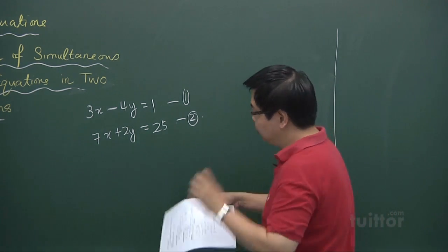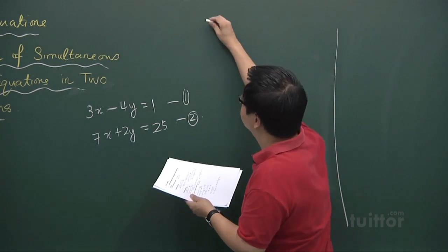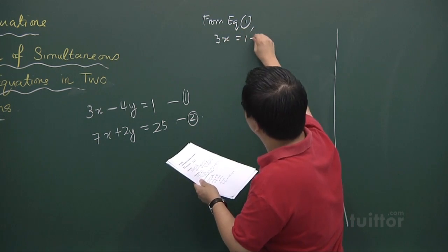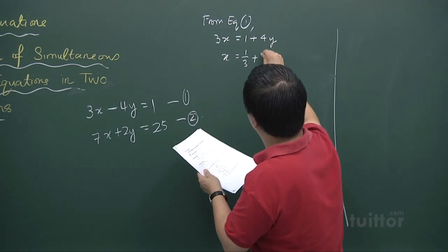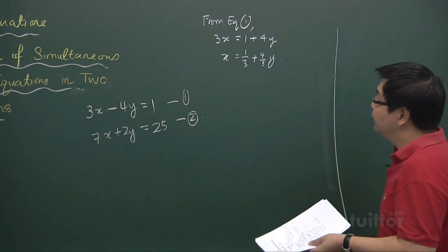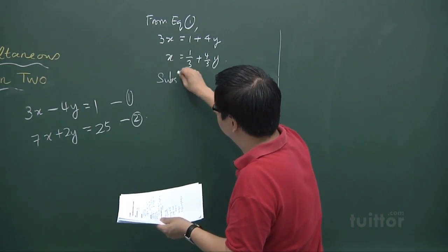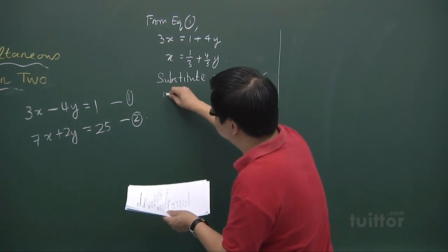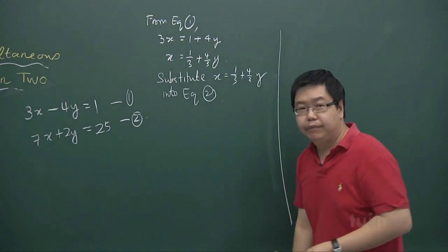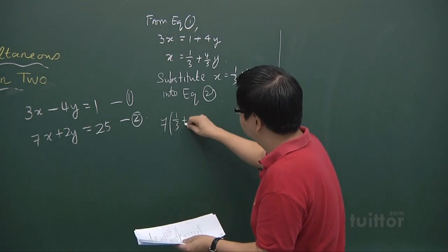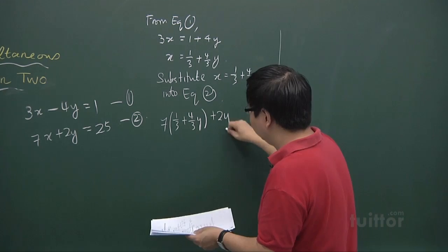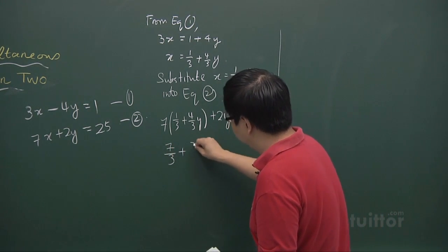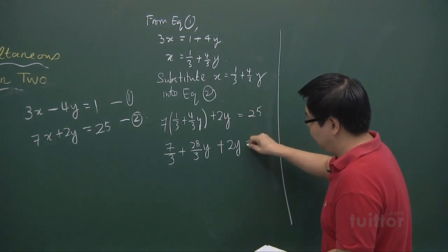First, the substitution method. For substitution method, we'll make x a subject. So from equation 1, we have 3x equals 1 plus 4y, and x equals 1 third plus 4 over 3 times y. Now you substitute this value — x equals 1 third plus 4 over 3y — into equation 2, which gives us 7x plus 2y equals 25. We simplify by expanding out first: 7 over 3 plus 28 over 3 times y plus 2y equals 25.